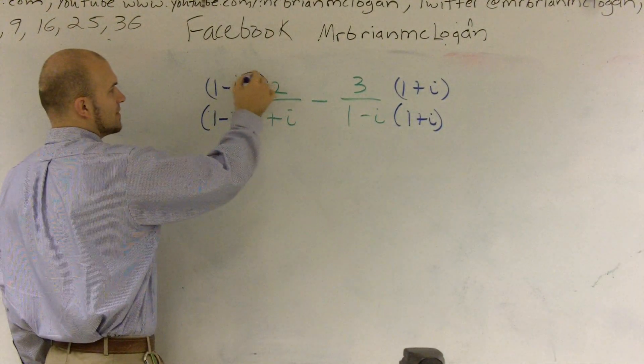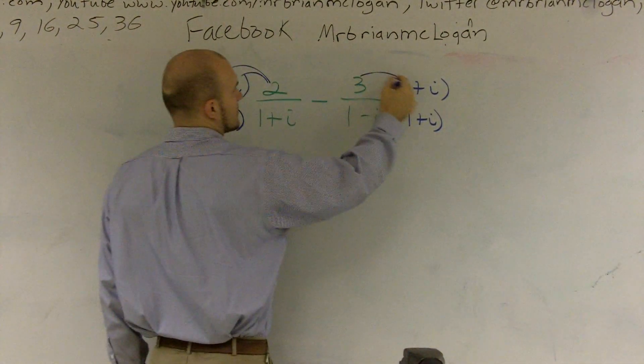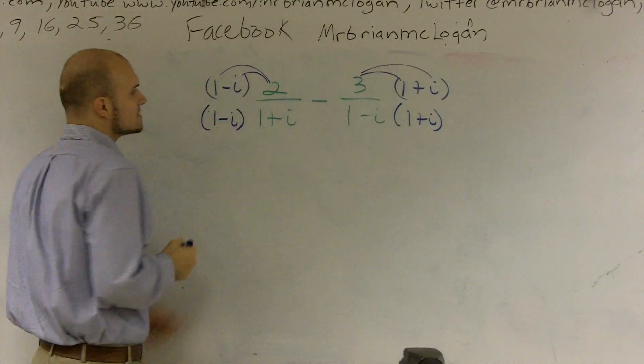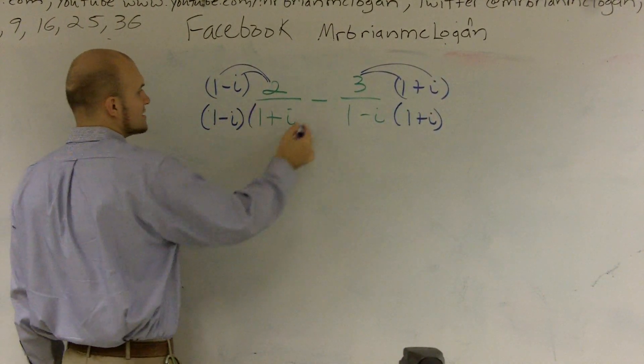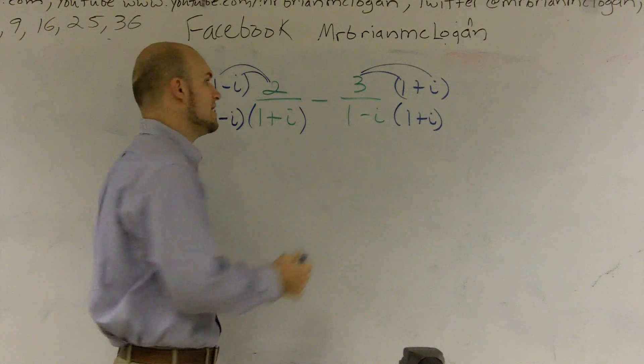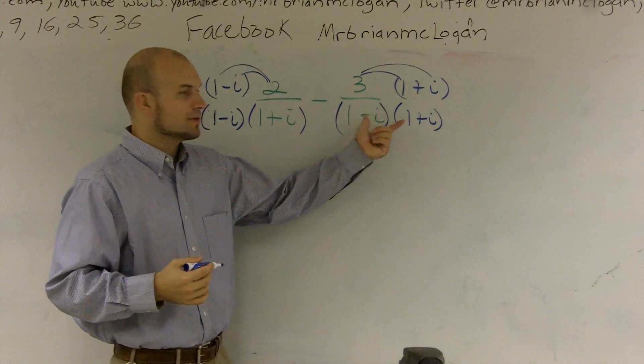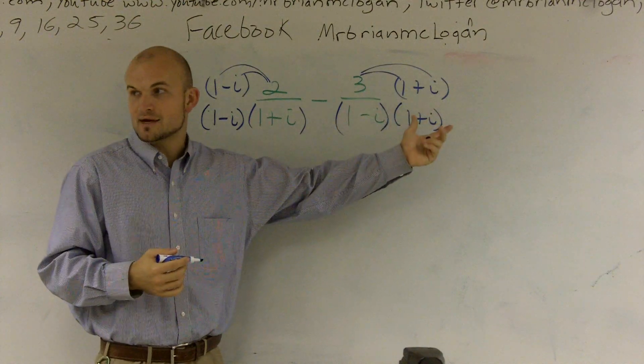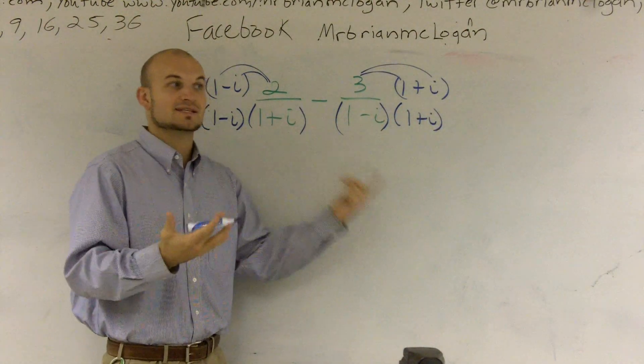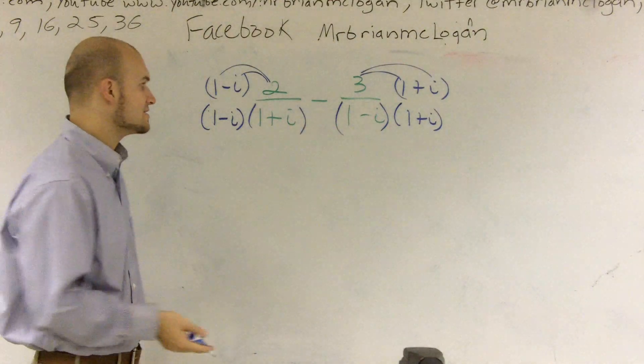And then for here, I can just do distributive property. And we'll see what we get. Now, since these are conjugates of each other, we know that our middle terms are going to cancel out. Whenever you have a plus or a minus, and you have the same first number and the same last number, we also look at it like a difference of two squares, and these are conjugates.